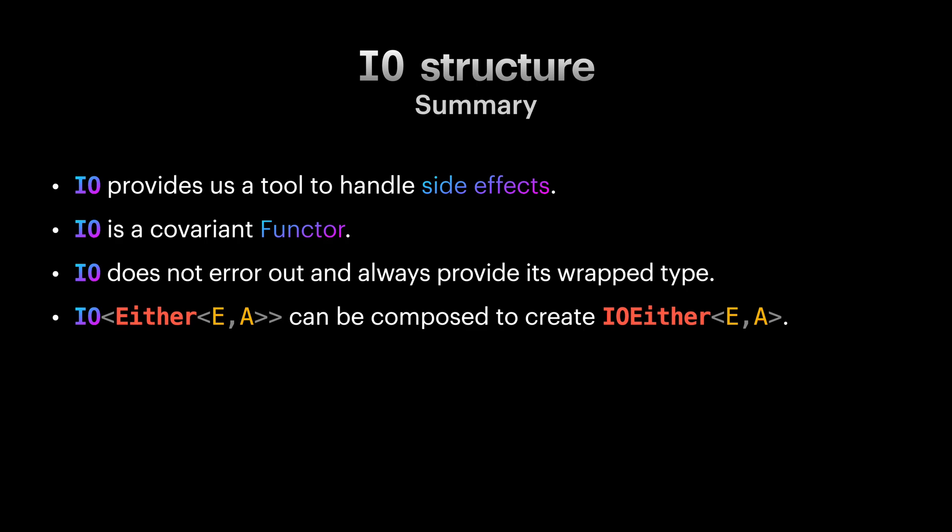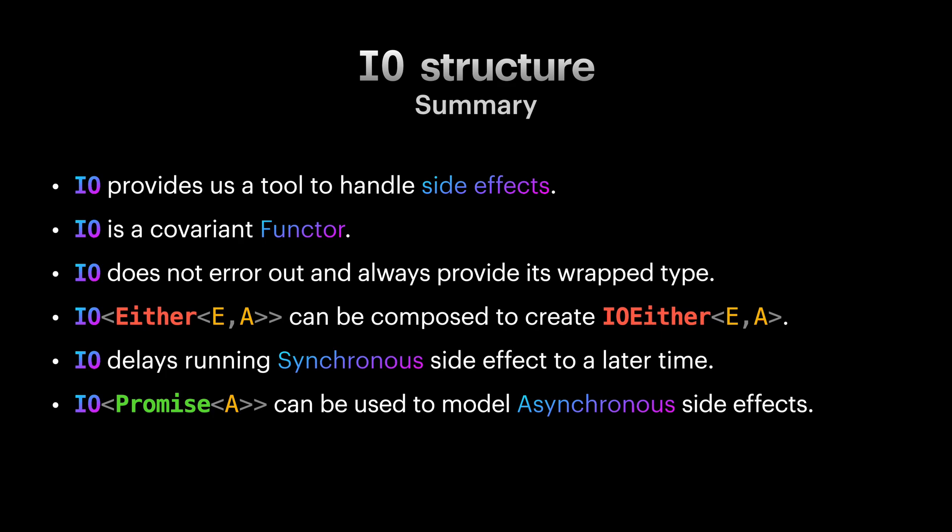Something to notice and I will cover it in next videos is, IO is synchronous by itself. But most side effects we know like fetching from the internet or writing to a database are asynchronous. How can we model asynchronous side effects? We can use promise with IO to bring asynchronous support to IO. This structure is so useful that we have a special name for it. It is called task. But more on that later.